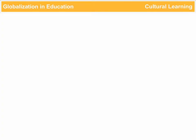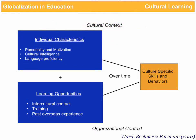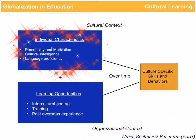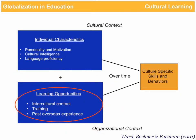In this graphic, under cultural learning through context, the cultural context sphere is at the top and the organizational context is at the bottom. You see the individual characteristics that stand out. These will be different for each person depending on their experiences and what cultural grid they're coming from, plus the learning opportunities they have within another culture.